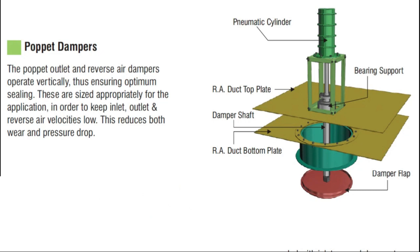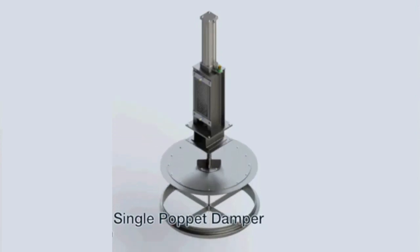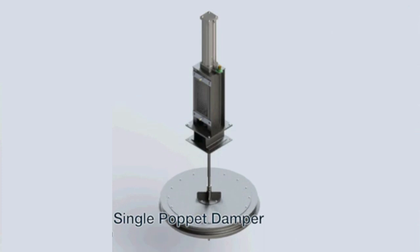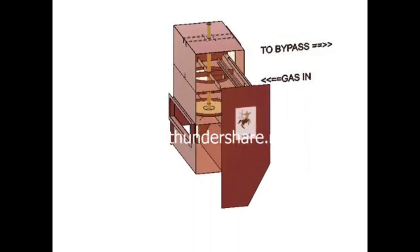Poppet dampers and reverse air dampers operate vertically, ensuring optimum sealing. They are sized appropriately for the application in order to keep inlet, outlet, and reverse air velocities low, which reduces both wear and pressure drop. The damper assembly includes a pneumatic cylinder, which operates by air pressure. While doing maintenance, you need to take care of these cylinders.